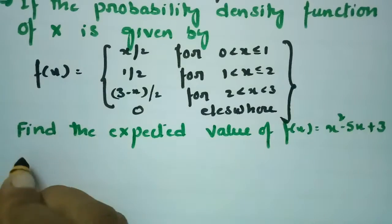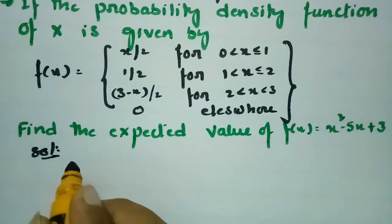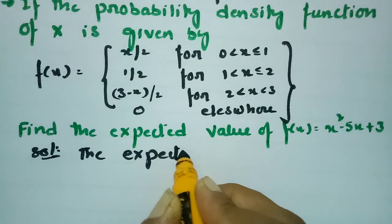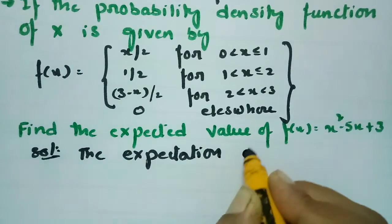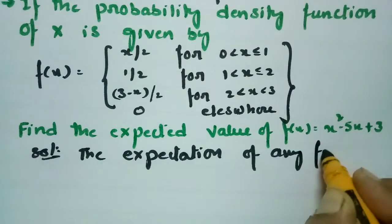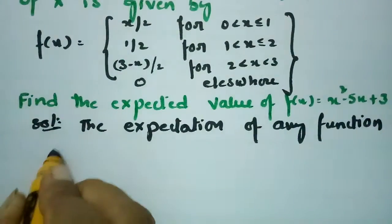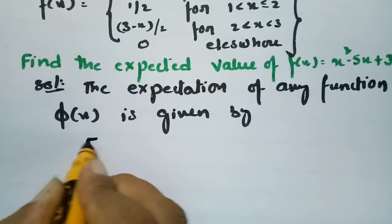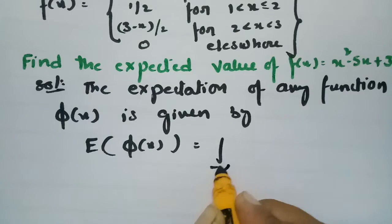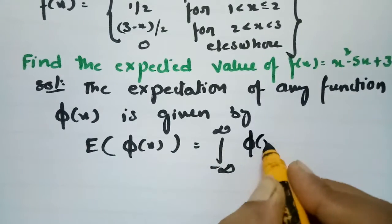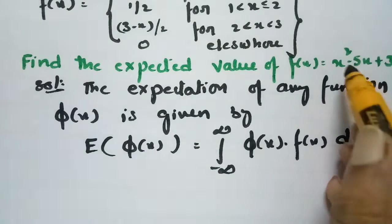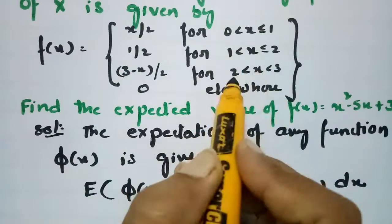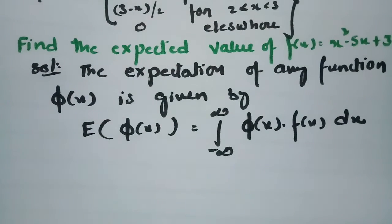Here is the solution. The expectation of any function φ(x) is given by the formula: E[φ(x)] = integral from minus infinity to plus infinity of φ(x) · f(x) dx. Since f(x) is defined piecewise, we split the integral at the boundary points 0, 1, 2, and 3.